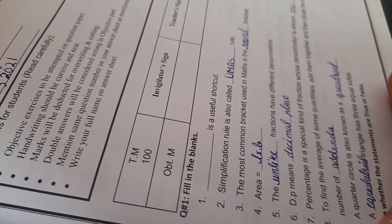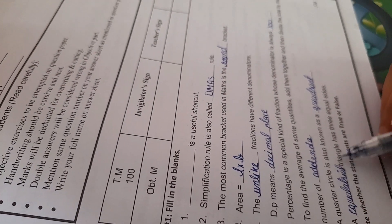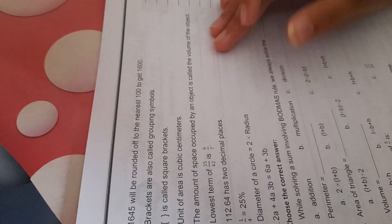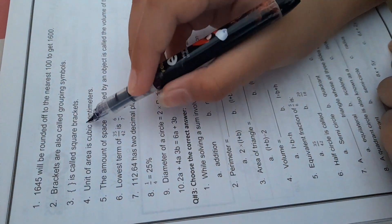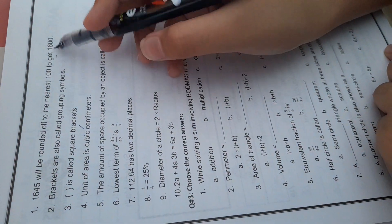Question number two. State whether the statements are true or false. Number one, 1,645 will be rounded off to the nearest hundred to get 1,600. True. Number two, brackets are also called grouping symbols. True.